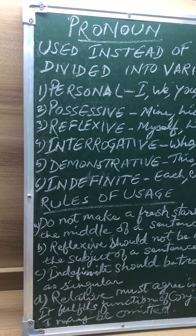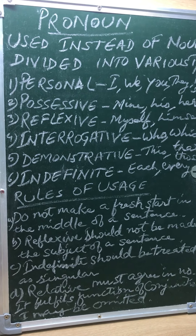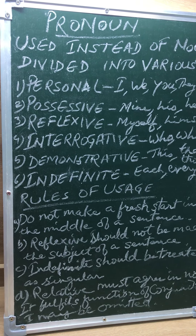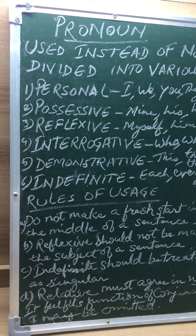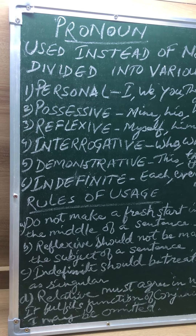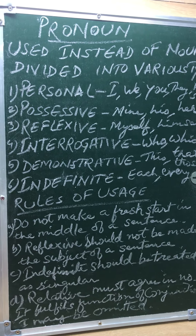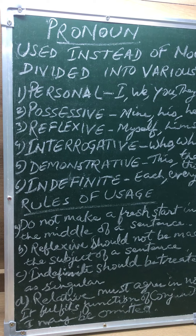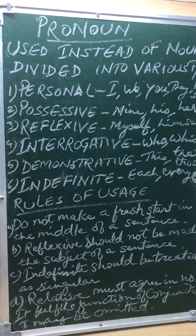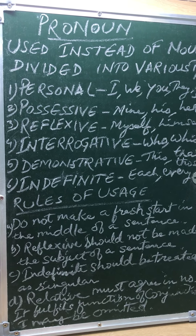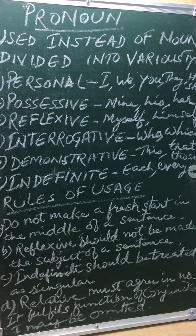The fourth type is the interrogative pronoun: who, which, what. These are words which introduce a question and function usually as the subject or object of the verb. When attached to nouns, they act as adjectives. This, these, that, those, such are demonstrative pronouns. These are called demonstrative as they are used for indicating or pointing out some person or thing.